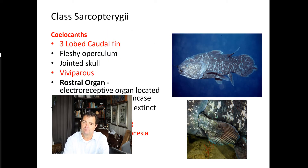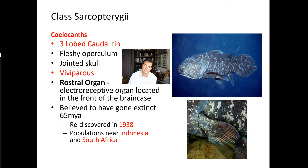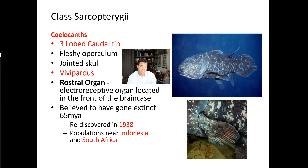Now for the Sarcopterygii — first, the coelacanths. They have a distinctive three-lobed caudal fin, a fleshy operculum, a jointed skull, and they are viviparous — giving live birth. They also have a rostral organ, an electroreceptive structure at the front of the braincase used to sense prey, similar to the ampullae of Lorenzini in sharks. They were thought extinct 65 million years ago but were rediscovered in 1938 and are occasionally caught in the Indian Ocean near Indonesia and South Africa.